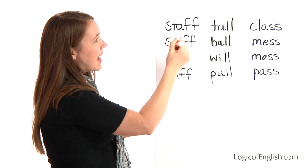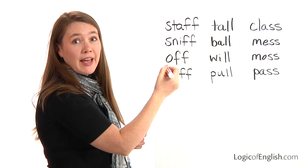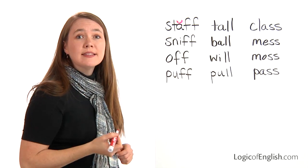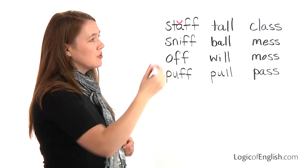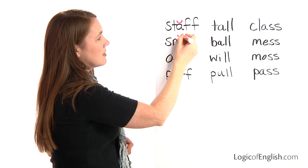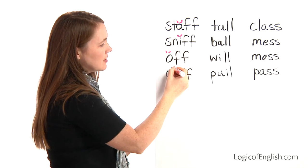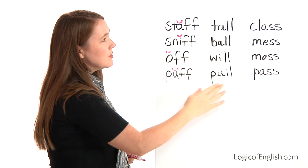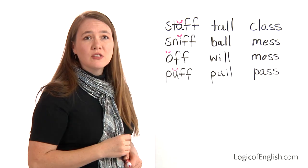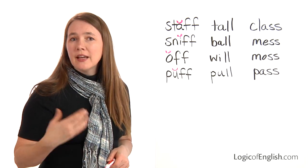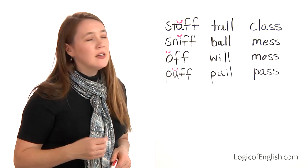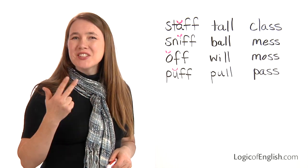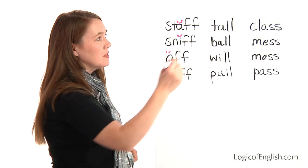In staff, we have the short ah sound. In sniff, we hear the short ih sound. Off is a short sound, and puff is a short sound. Now look at these words: tall, ball, will, and pull. Tall has the broad ah sound — broad sounds are marked with two dots. Ball also has the broad sound. Will has the short ih sound. And pull has the broad sound as well.